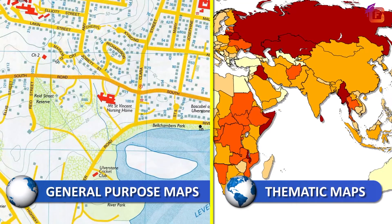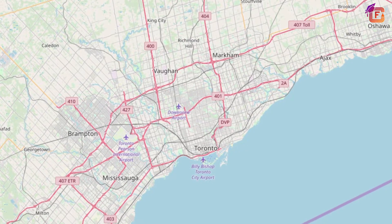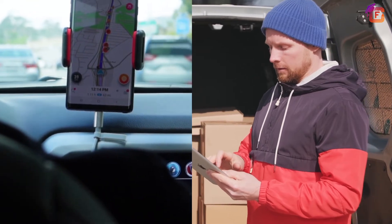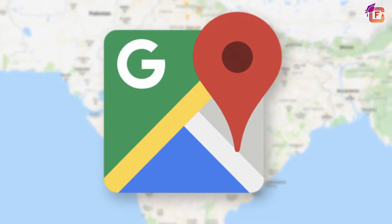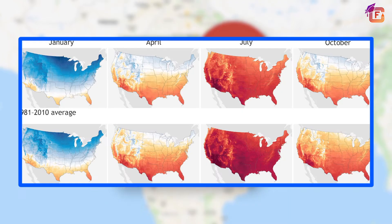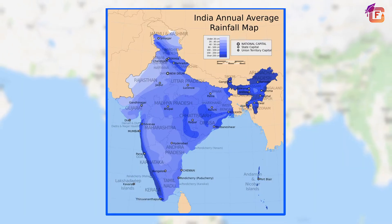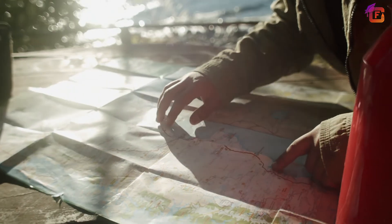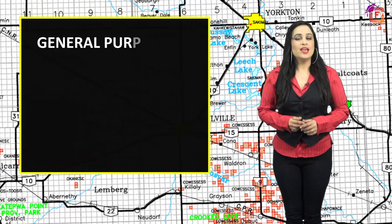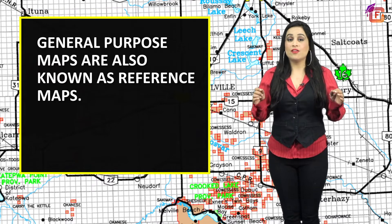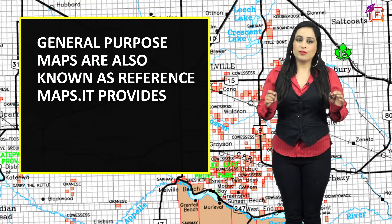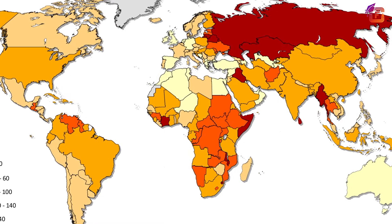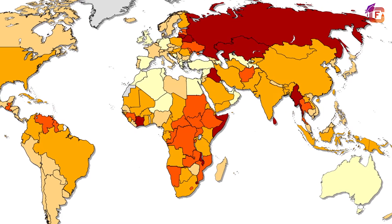General purpose maps are those maps which are of general use. They give information on a variety of subjects — a single map may show the distribution of crops, temperature, rainfall, and even people living in the area. They are often made according to certain rules of map making. General purpose maps are also known as reference maps, as they provide many types of information on one map.